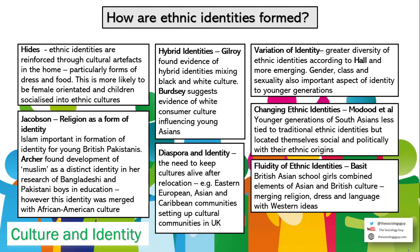There are a number of different ways ethnic identities are formed. Hyde looked at ethnic identities formed through primary socialisation — through artefacts and the way people are socialised by their parents. Jacobson found that religion was a form of identity, as did Archer, who found that young British Pakistani males identified themselves as Muslim and also adopted elements of African-American culture as a response to racism in the education system. Gilroy and Birdsey examined hybrid identities, and the idea that diaspora — people forcibly moved from one area to another who try to keep their community alive — also impacts identity.